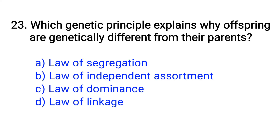Question number 23. Which genetic principle explains why offspring are genetically different from their parents? Option A: Law of segregation, B: Law of independent assortment, C: Law of dominance, D: Law of linkage. The right answer is Option B: Law of independent assortment.